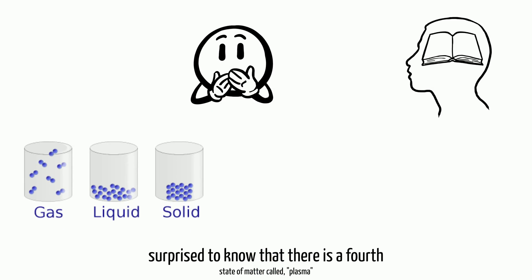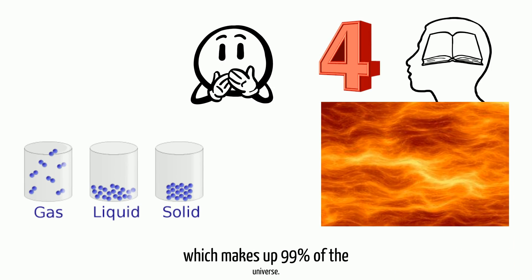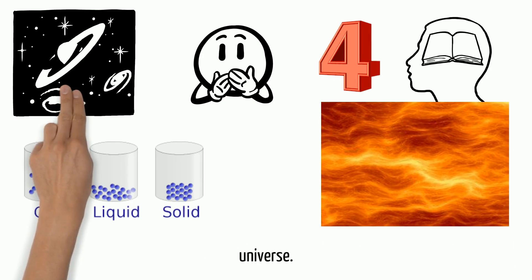You will be surprised to know that there is a fourth state of matter called plasma, which makes up 99% of the universe.